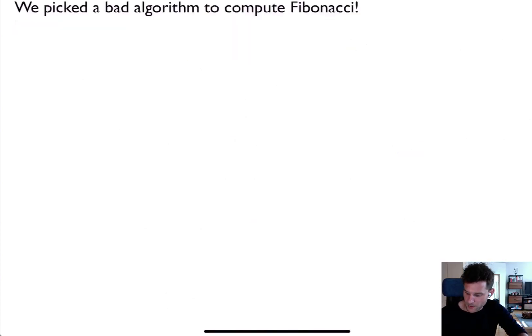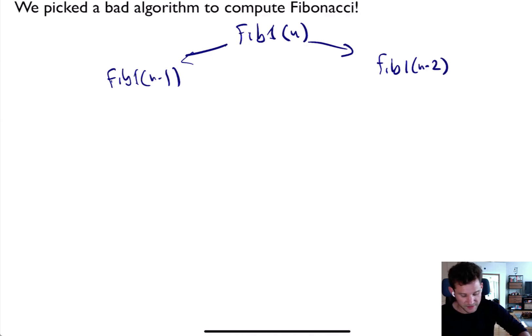The issue here, of course, is that in order to compute Fib1(n), I had to compute Fib1(n-1) and Fib1(n-2). I had to go and do these subtasks recursively. Now, let's think about how this tree continues.